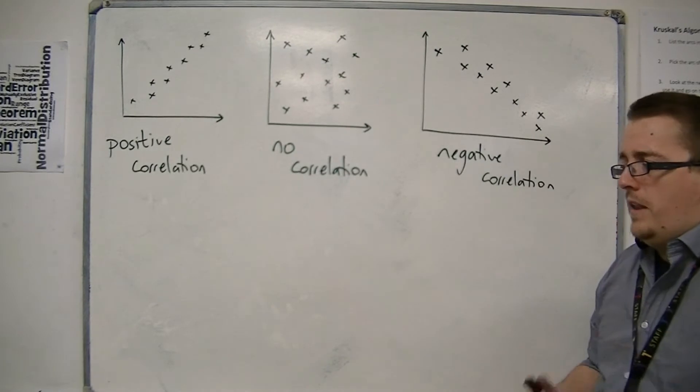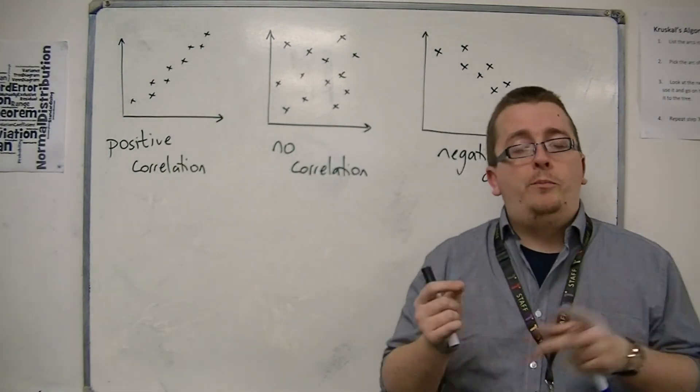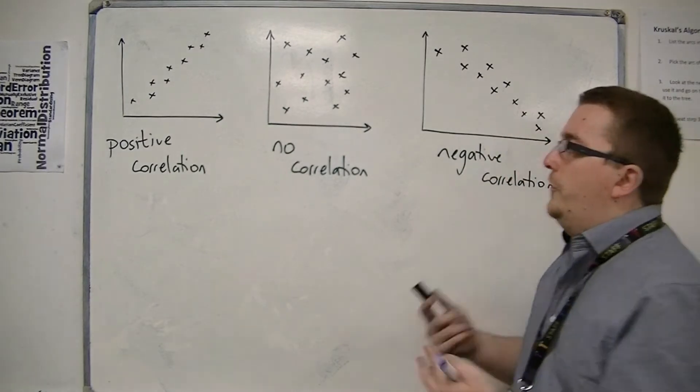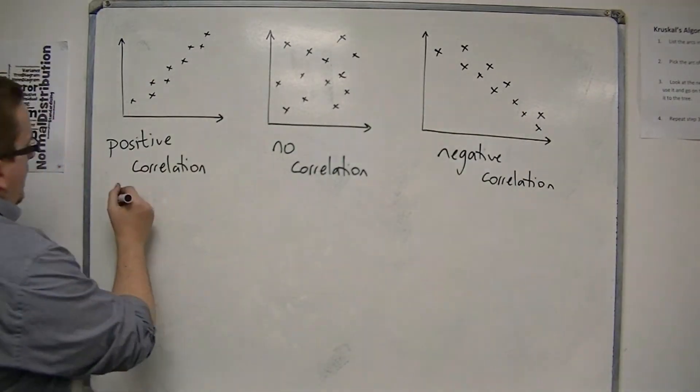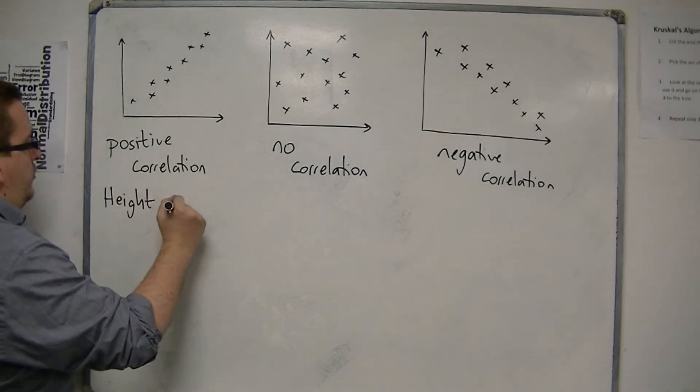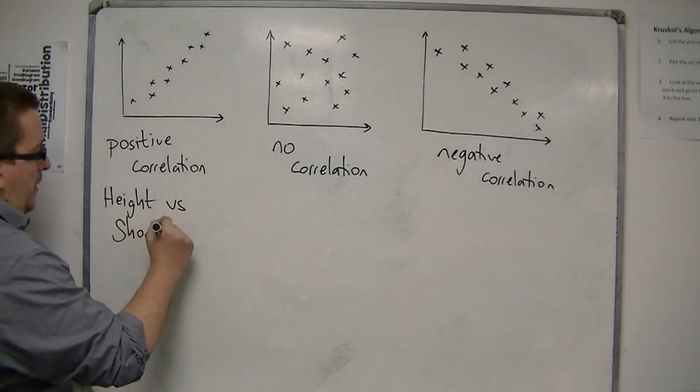Because if a tall person has too small feet, then they're likely to fall over. And so, we would expect something like height versus shoe size to give us a positive correlation.